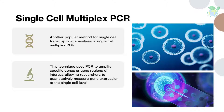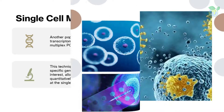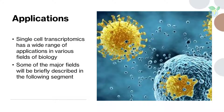Another popular method for single cell transcriptomics analysis is single cell multiplex PCR, or scmPCR. This technique uses PCR to amplify specific genes or gene regions of interest, allowing researchers to quantitatively measure gene expression at the single cell level.